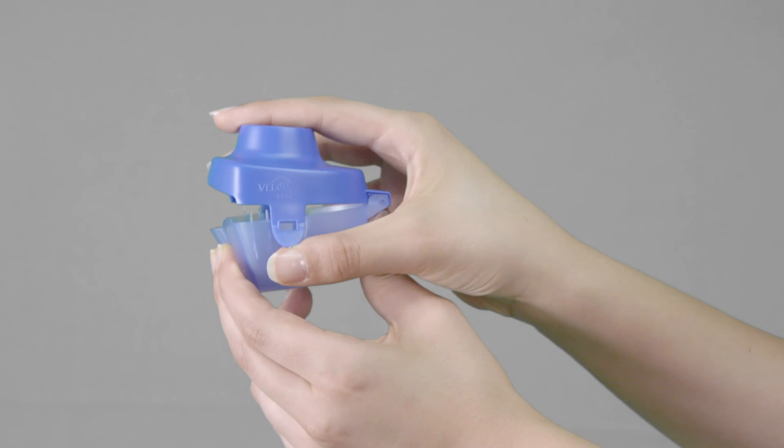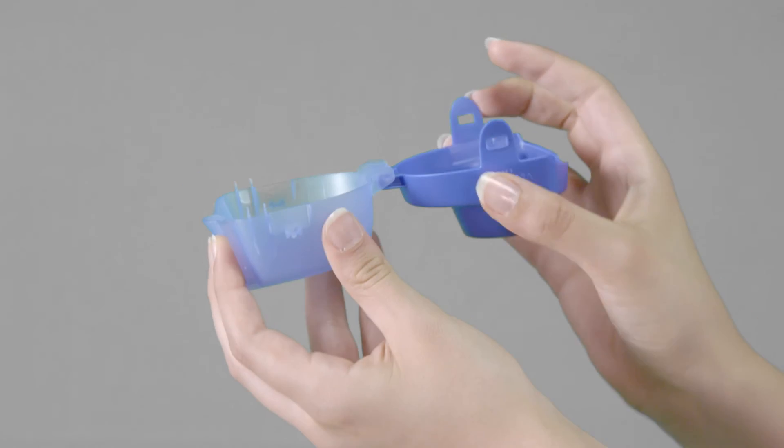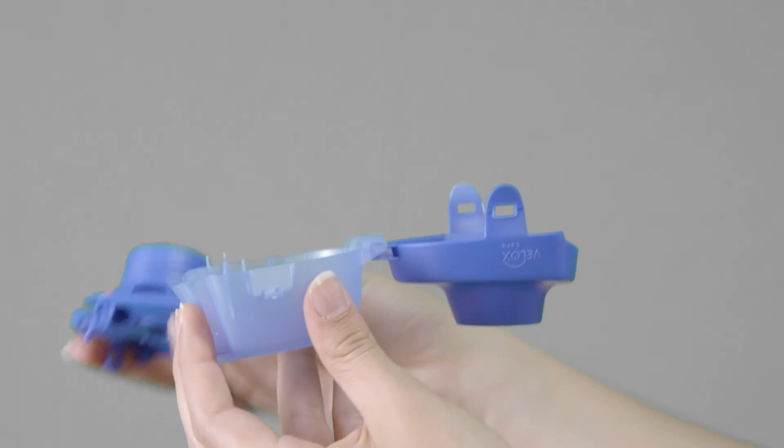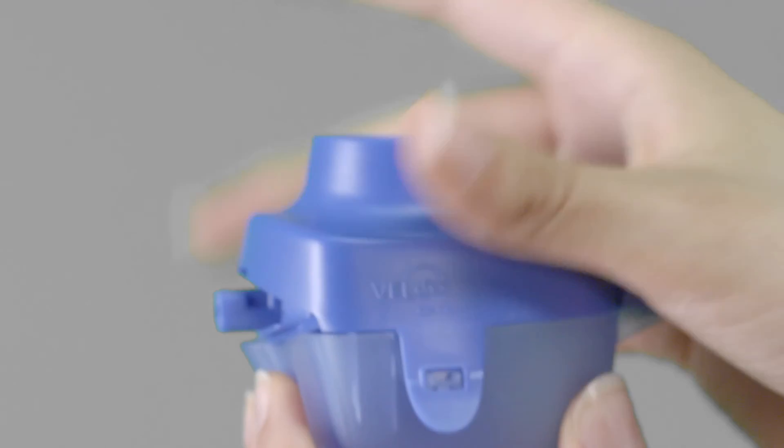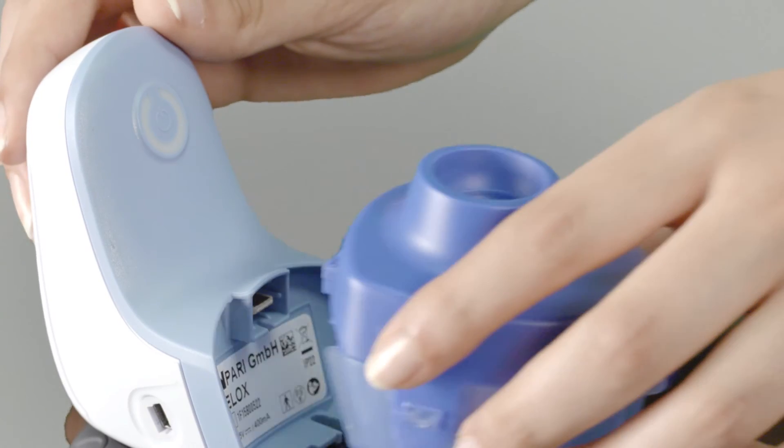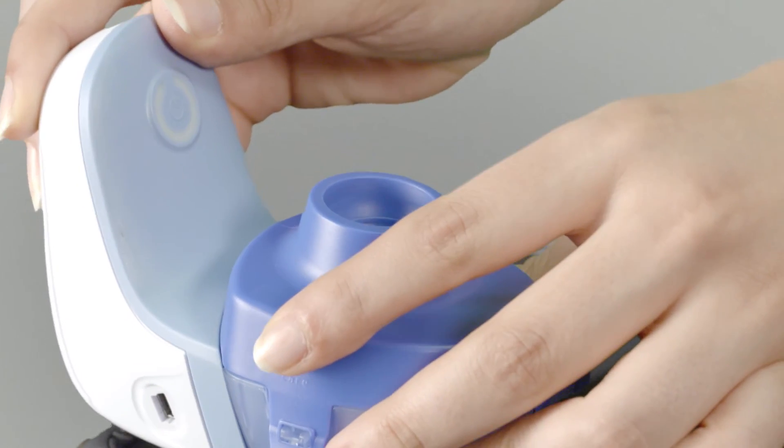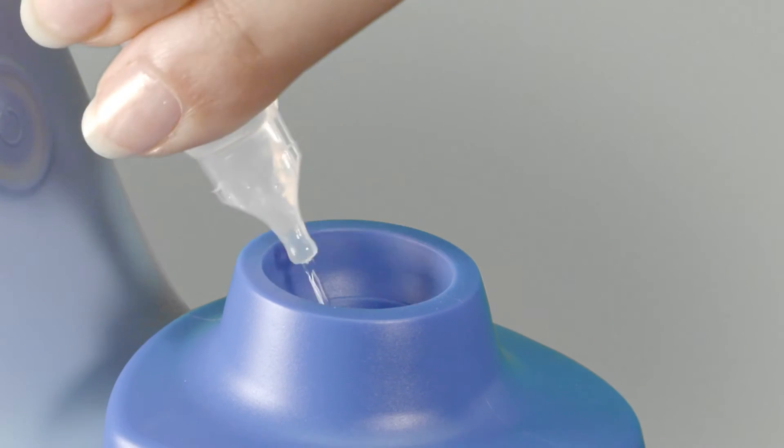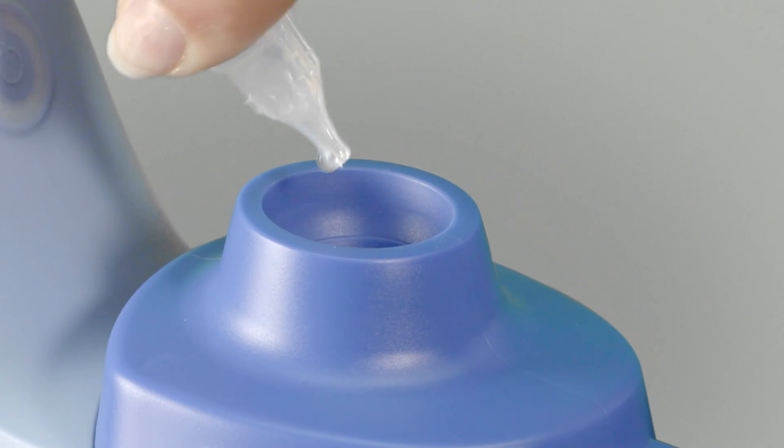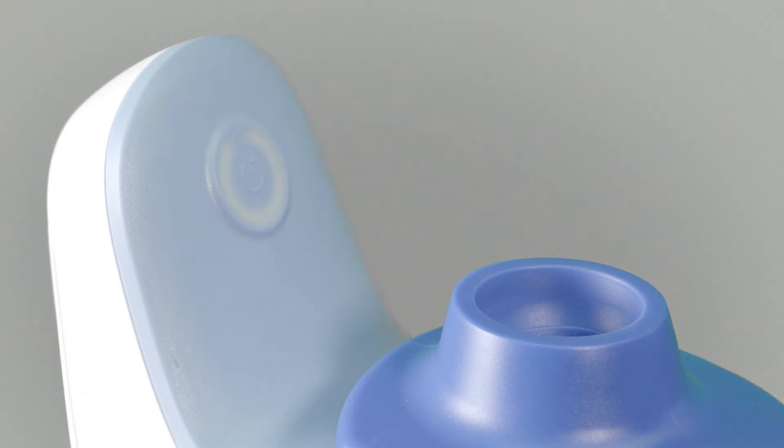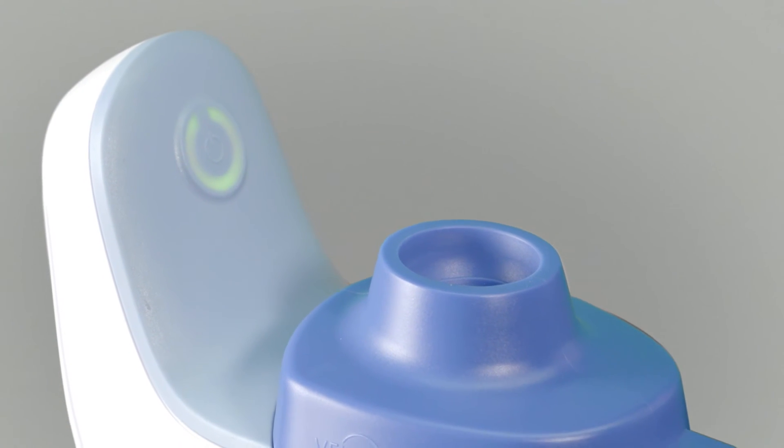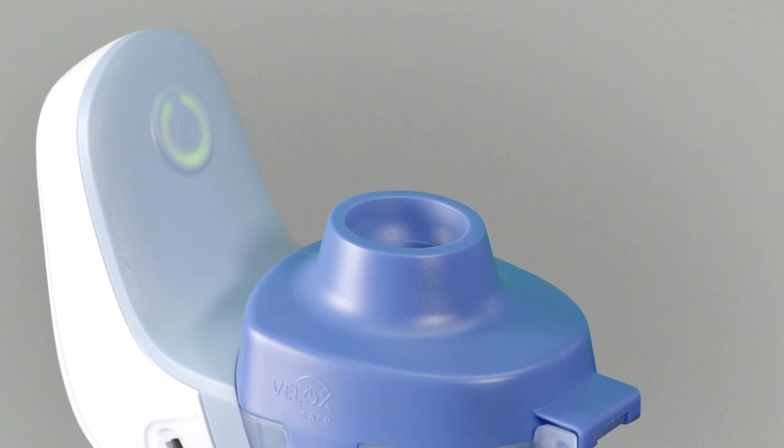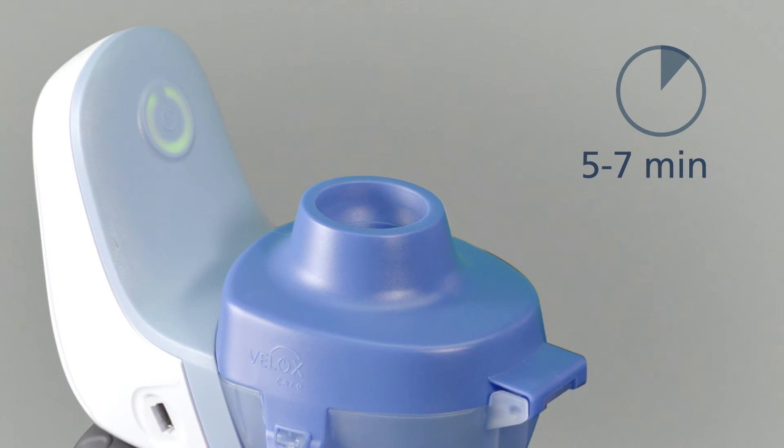Velox Care helps you keep the membrane inside your nebulizer clear. It is a simple way to clear out the pores in the membrane. Insert the medication reservoir with the aerosol head upside down into Velox Care and connect to the controller. Pour in distilled water or a saline solution and switch it on. The solution used will be pushed through the membrane, clearing it out as it goes. This process takes around 5 to 7 minutes.